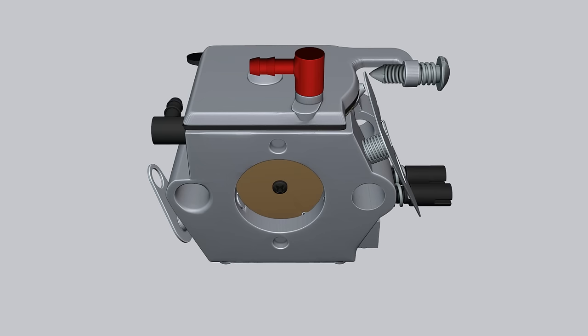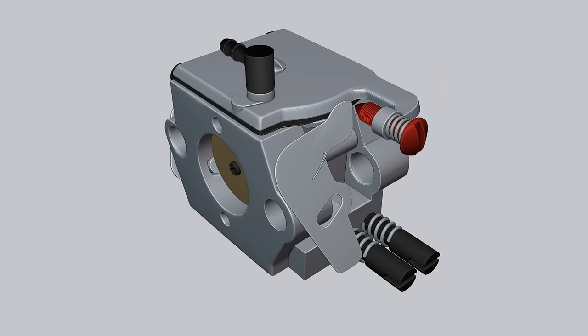To operate the pump, a pulsating, variable airflow is required. To do this, the fitting located on the top cover of the carburetor is connected to the engine crankcase.